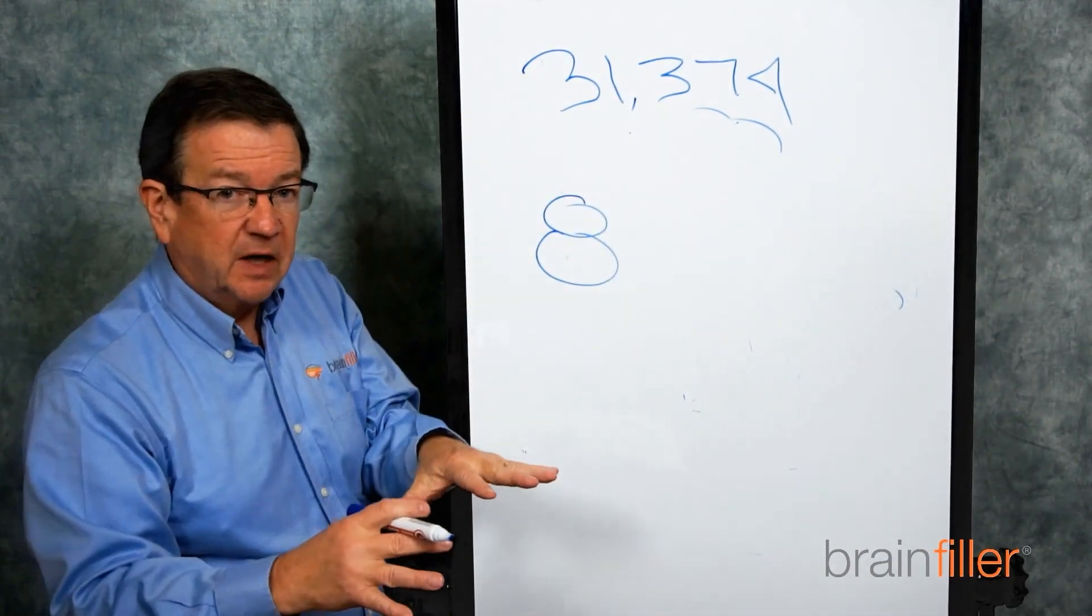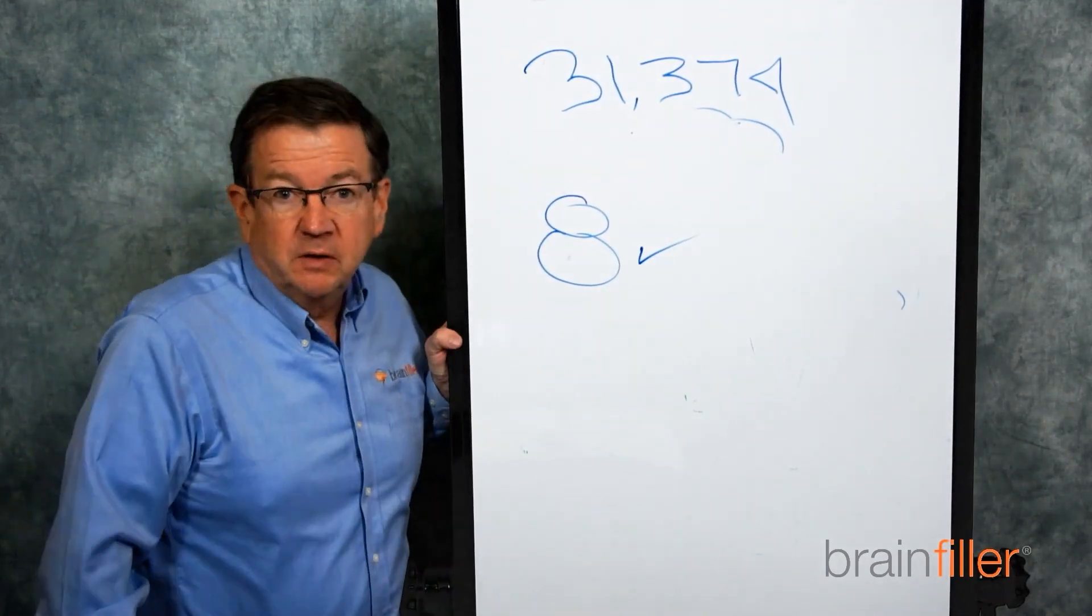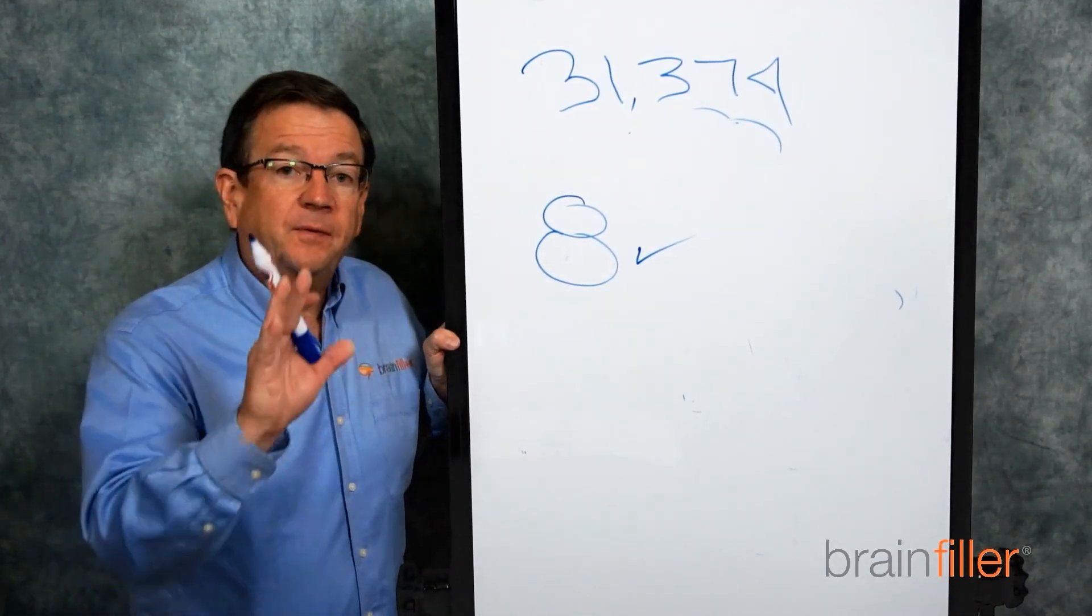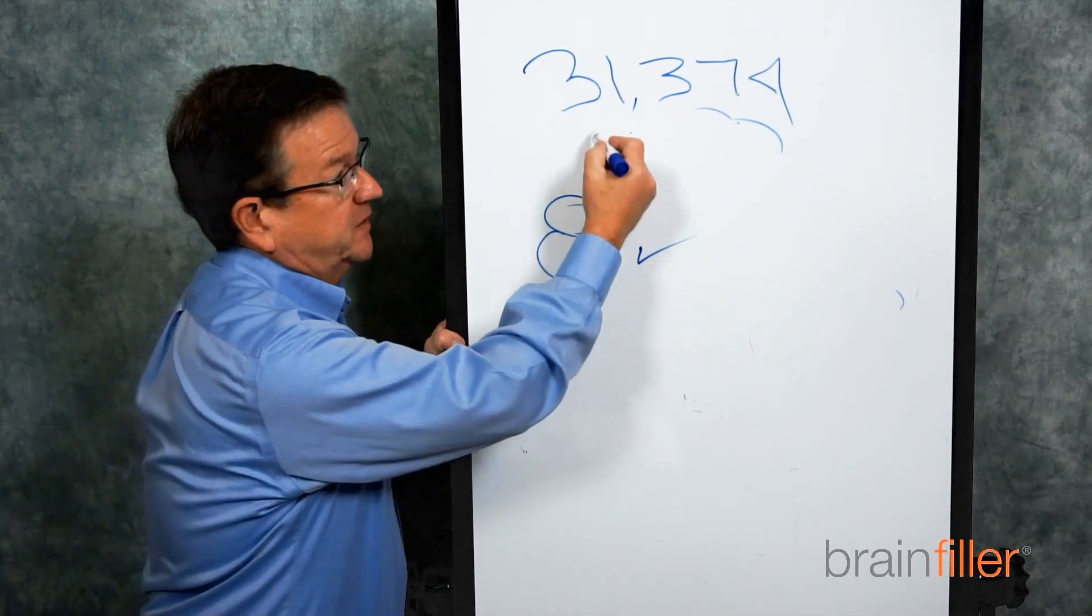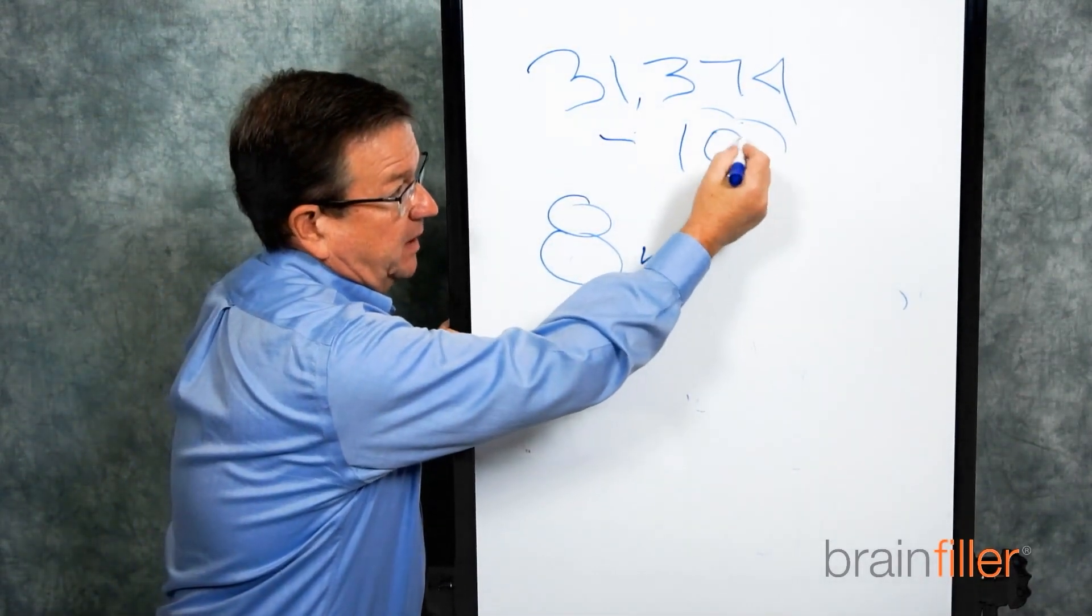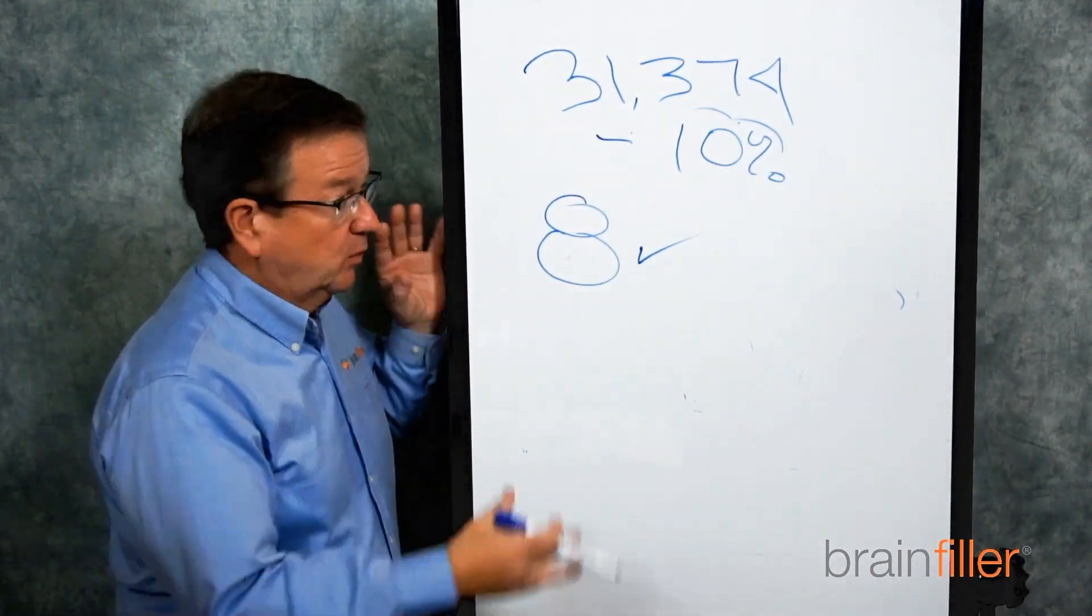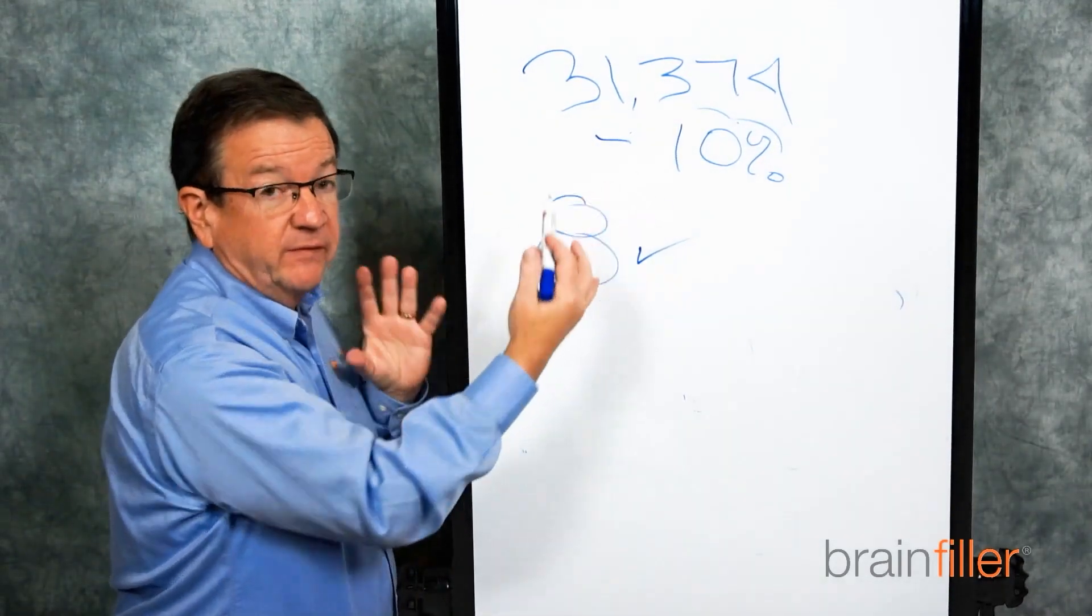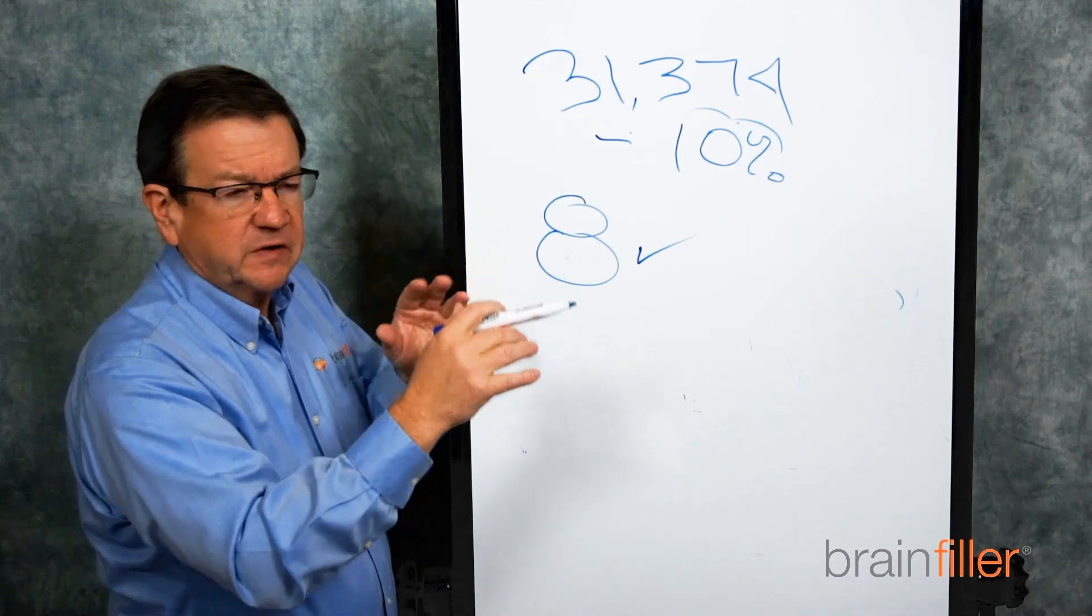You start out with 31,374, build your model, run your study, and identify all the locations where 8 calorie is going to work. That's your base case. Now, take the 31,374 and subtract maybe 10%, reduce it. So you drop it a few thousand amps. Rerun the study. It's easy to do that when you have a database, when you're using software. Just go up to the source and change it. It's real easy.